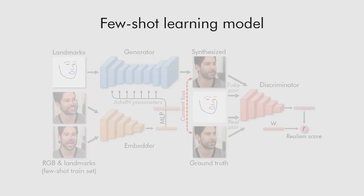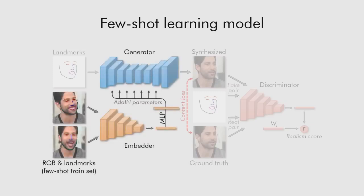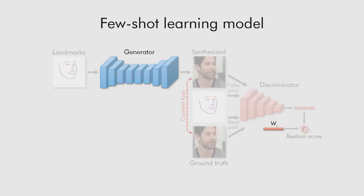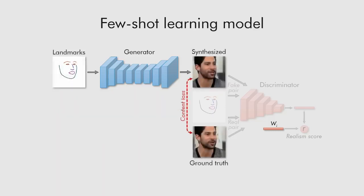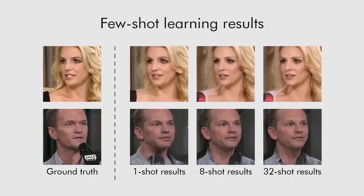After meta-learning, we are able to fine-tune the generator and the discriminator for a new person. The generator and discriminator networks have tens of millions of parameters; still, such fine-tuning is possible on just a few images, thanks to the good initialization provided by the meta-learning stage. Before fine-tuning for a new person, we initialize the adaptive parameters of the generator and the video embedding inside the discriminator using the output of the embedder network. After that, we train the generator and the discriminator on the available few images using the same adversarial objective as in the meta-learning stage.